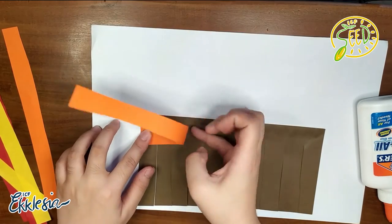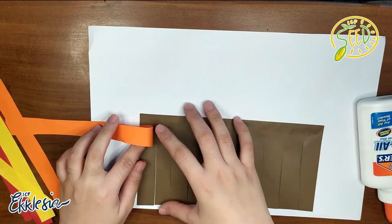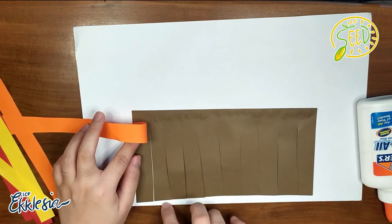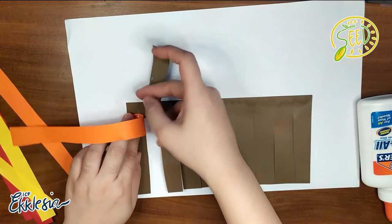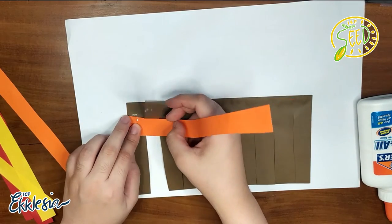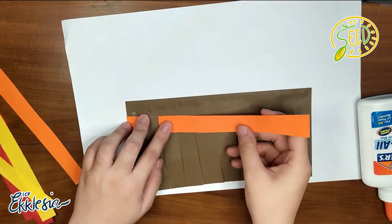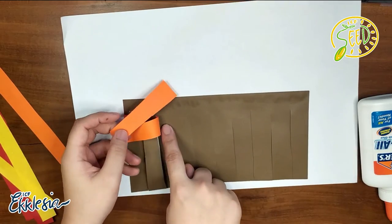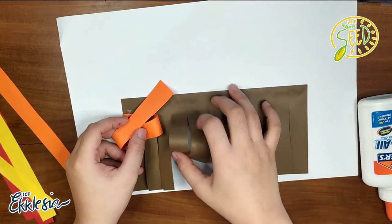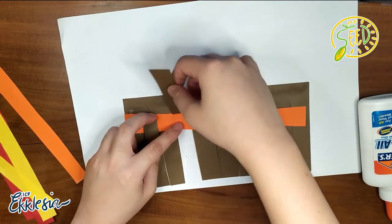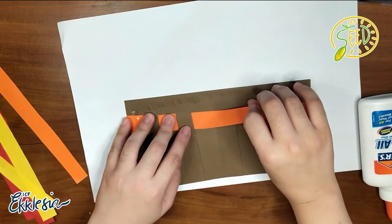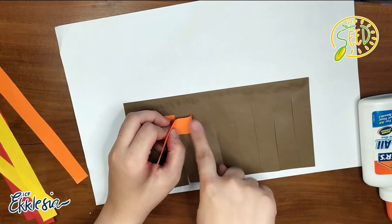Sunod natin gagawin, Under. Lalagay natin siya Under, nung second strip or yun sa second na parang flap. Under. Then, ano sunod sa Under? Over. Ayan, dito yung Over. Then, ano ulit? Under. Then, Over, Under, Over, Under, Over, Under. Iyon lang yung susundin natin.